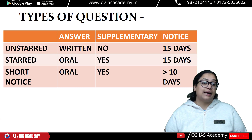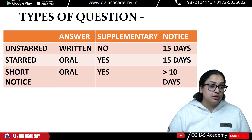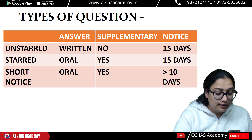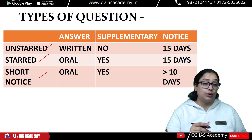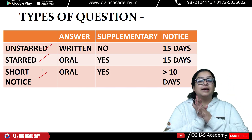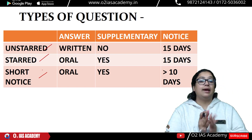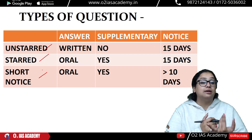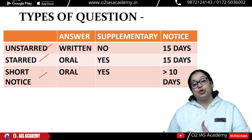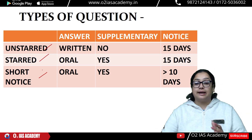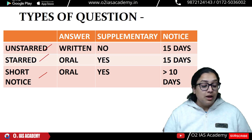There are three types of questions: Unstarred questions, Starred questions, and Short Notice questions. Each type has a different way of being answered — either in written form or oral form — and different rules about whether supplementary questions can be asked.